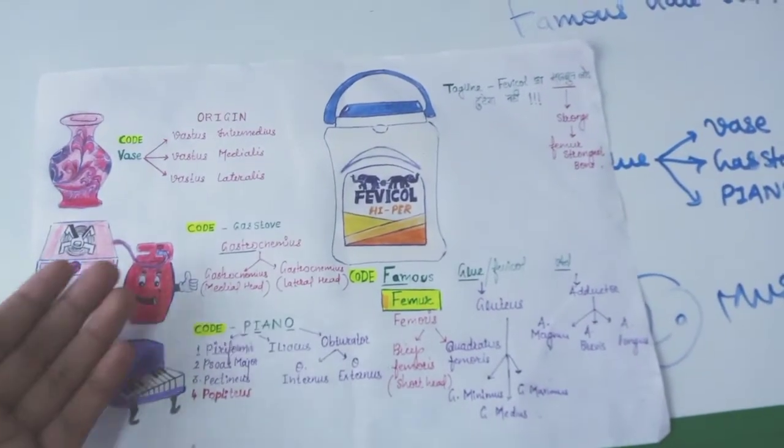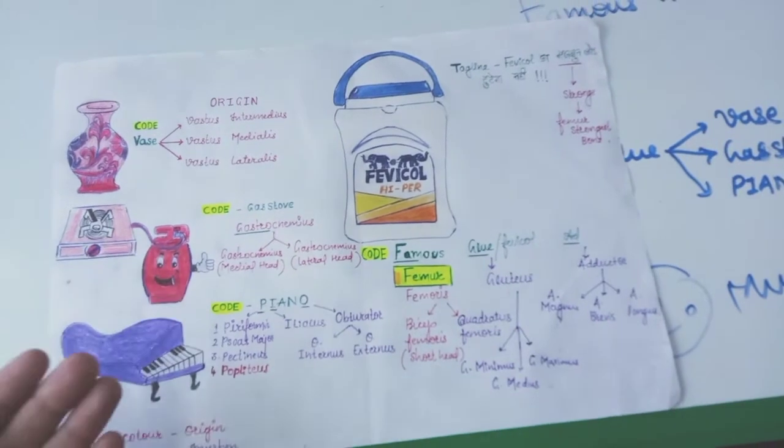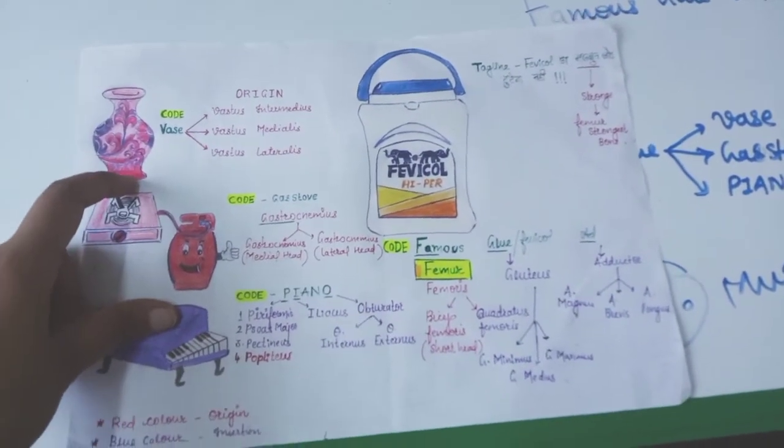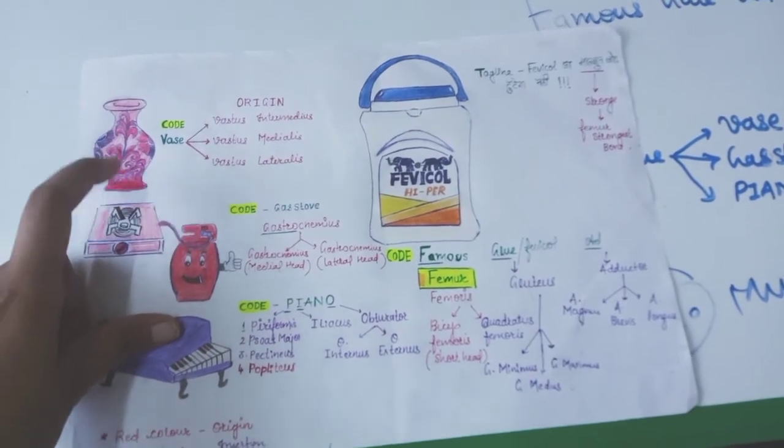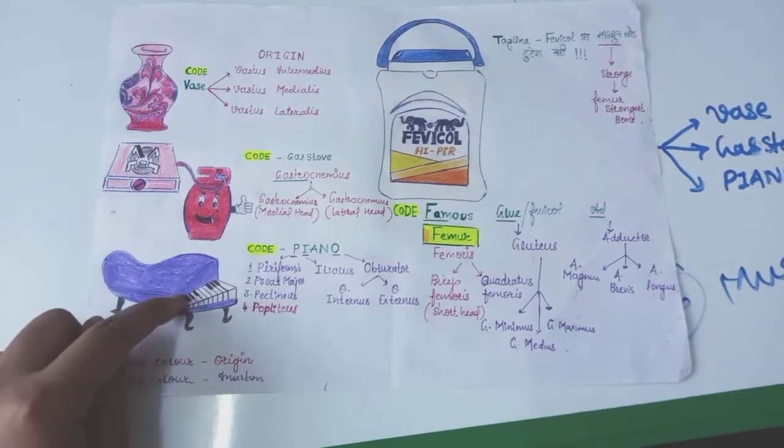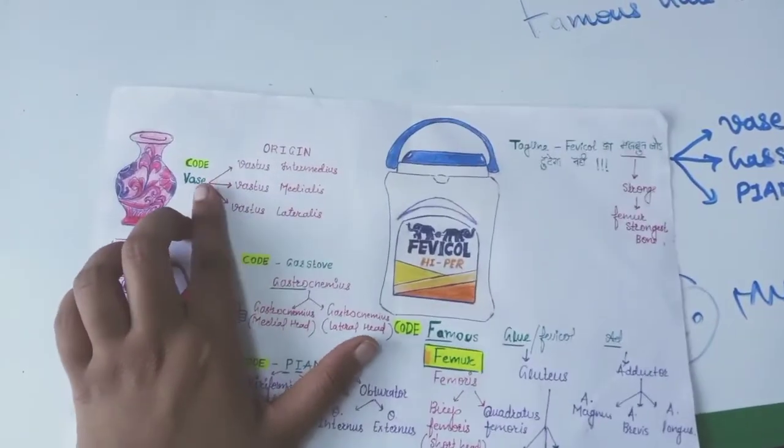Flower pot can be glued, then gas stove can be glued, piano can be glued. The red color is for origin and the blue color is for insertion. Then from vas, what you'll remember: vastus intermedius, medialis, then lateralis.